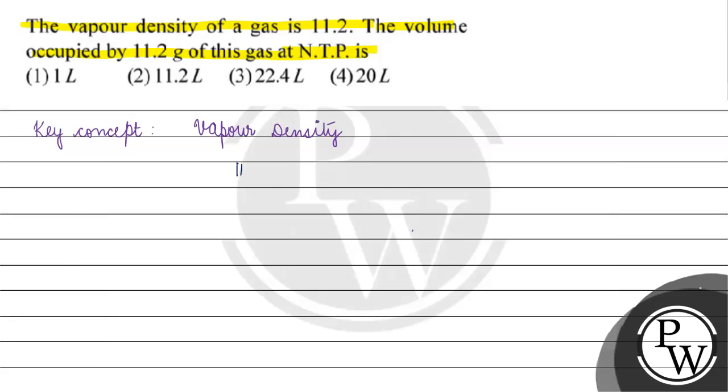The vapor density is basically weight of x molecules of a gas divided by weight of x molecules of hydrogen.